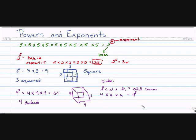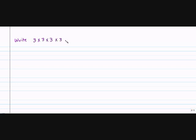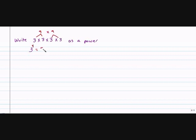Let's try another one. If I write three times three times three times three as a power, my base is three — the number I'm repeating — and my exponent tells me how many times I wrote it: one, two, three, four. So it's three to the fourth. And three times three is nine, nine times nine is eighty-one. Three to the fourth equals 81.